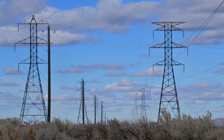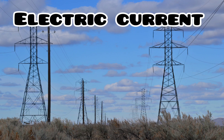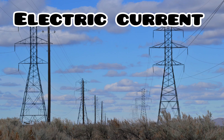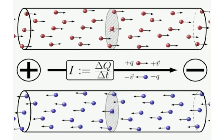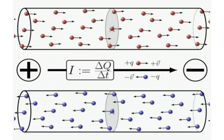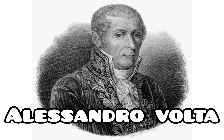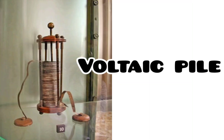Does anyone have any idea who invented electric current? Electric current was invented by Italian physicist Alessandro Volta. He found that certain chemical reactions can produce electricity, thereby making a voltaic pile — that is, an electric battery — which had a stable electric current.